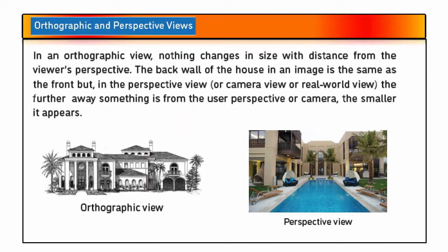Let's look at the actual differences between these two images. In an orthographic view, nothing changes in size whether you see it from the front or the back. But in a perspective view, if you move towards the building it becomes bigger, and if you move further away it becomes smaller. Nothing changes in an orthographic view, but in a perspective view you will see changes.